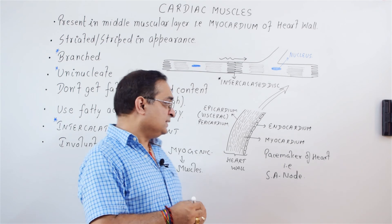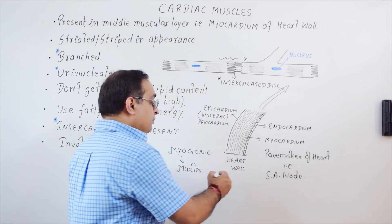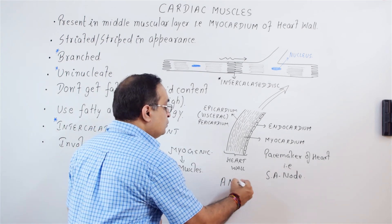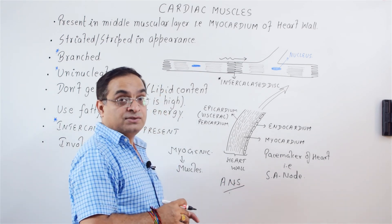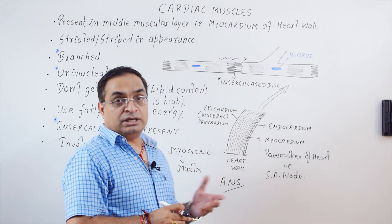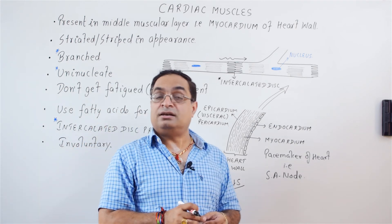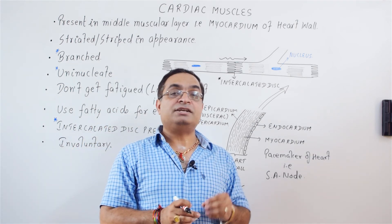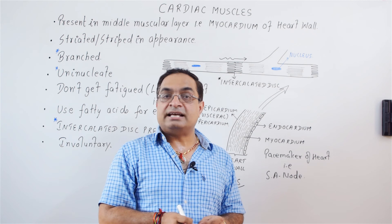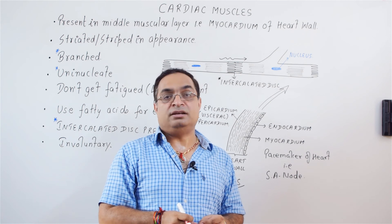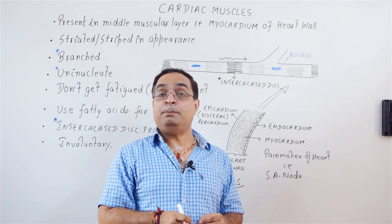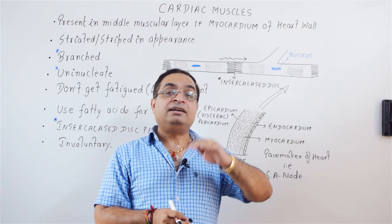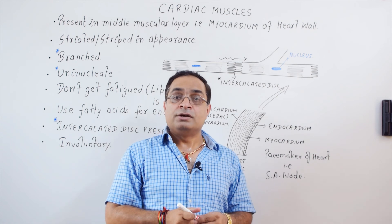Cardiac muscle fibers are regulated by the autonomic nervous system, ANS. We know that the vagus nerve supplies the SA node. The vagus nerve releases acetylcholine, which hyperpolarizes the SA node and decreases the heart rate.